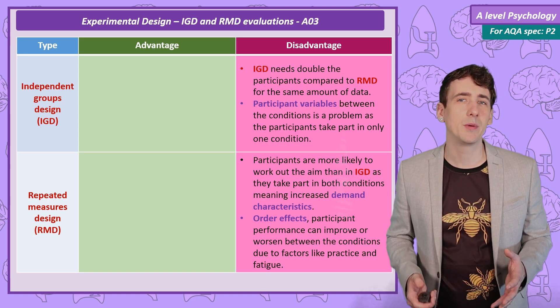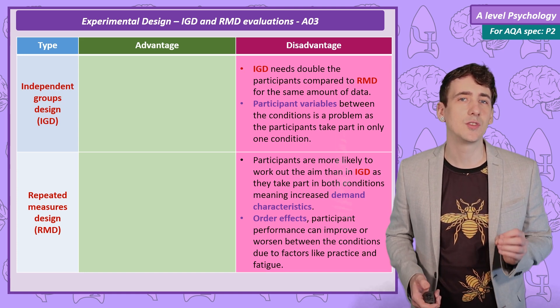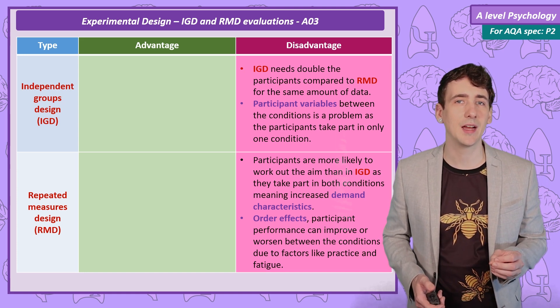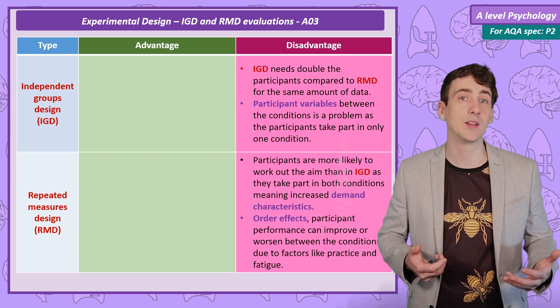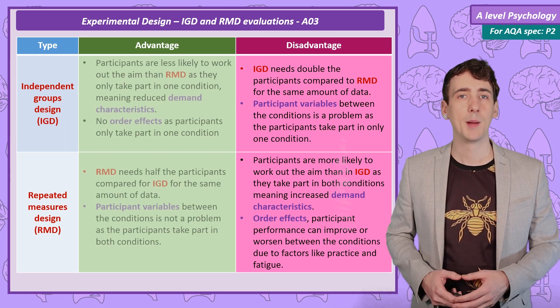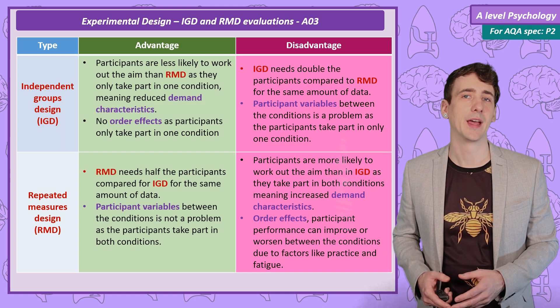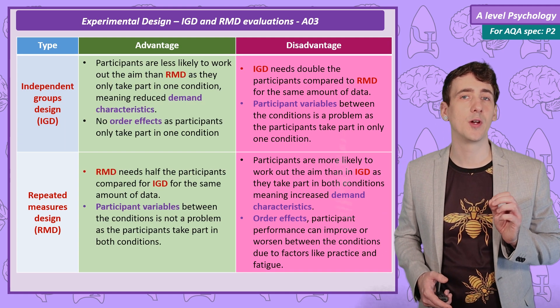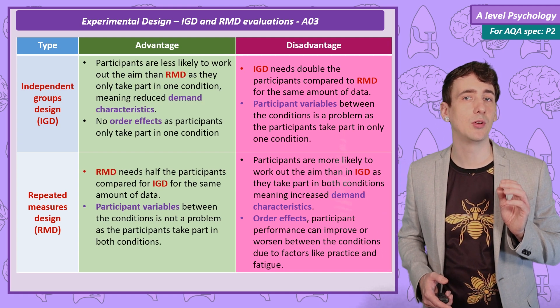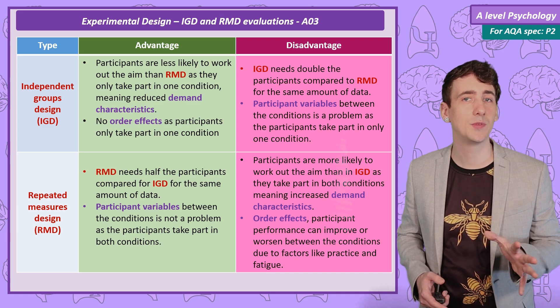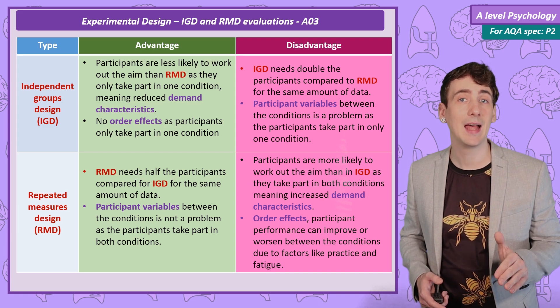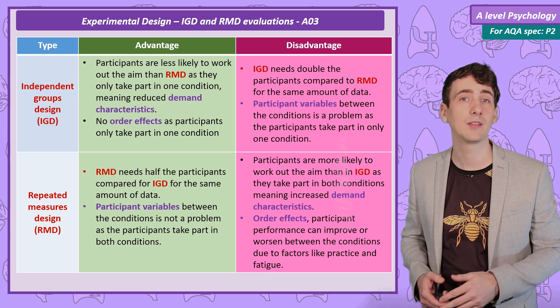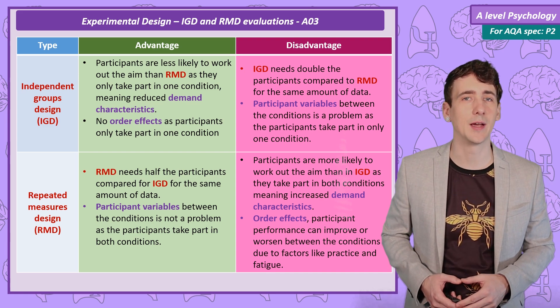The strengths of one of these two experimental designs are the weaknesses of the other. But there is another design — one that attempts to fix the problem with participant variables in the independent groups design, and order effects in the repeated measures design.